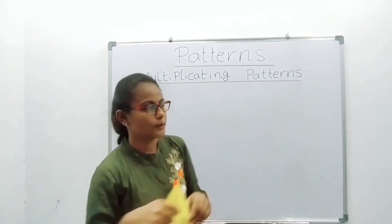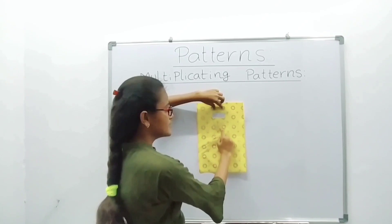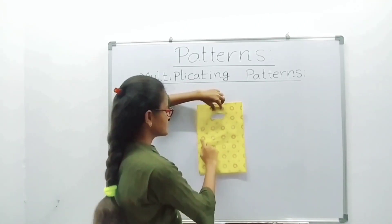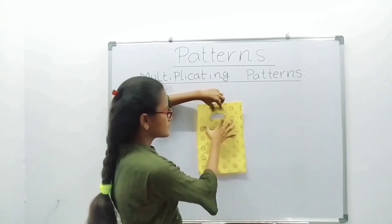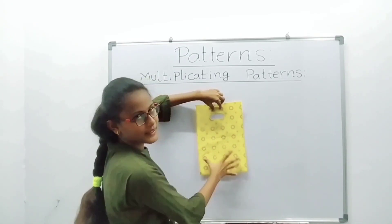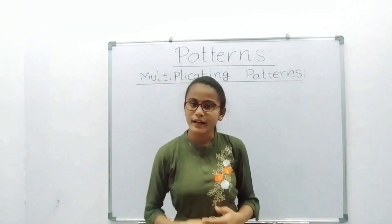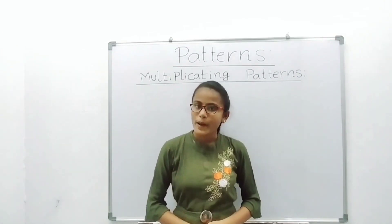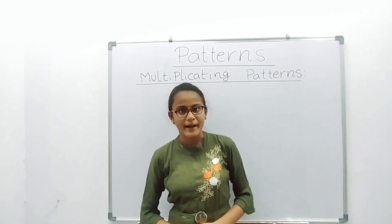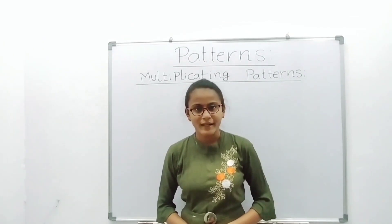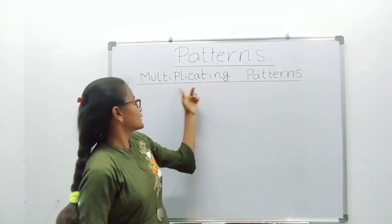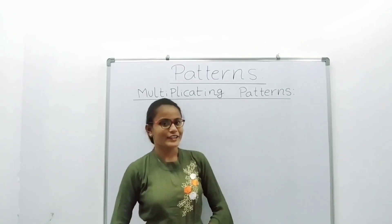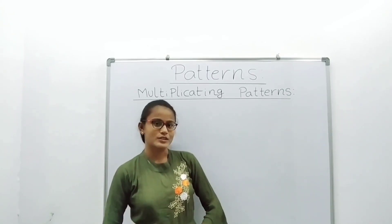In this cover, one line is circular rings, again stars, then circular rings, stars — this is also a repeating design. So patterns are of different types: increasing patterns, decreasing patterns, alphabet patterns, number patterns. In this video, I am explaining about multiplication patterns. After watching this video, please like, share, comment and subscribe to this channel.